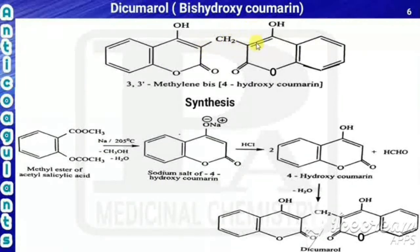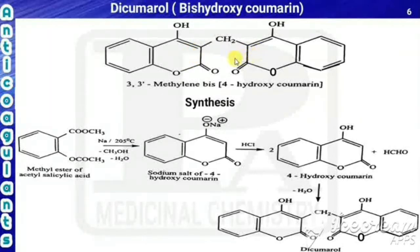The third positions of these two 4-hydroxycoumarin units are connected by a methylene bridge. This is called a 3,3'-methylene bridge. Therefore, the chemical name is 3,3'-methylenebis(4-hydroxycoumarin).